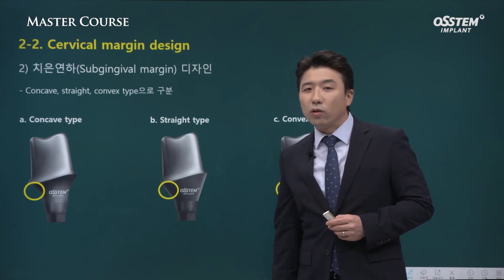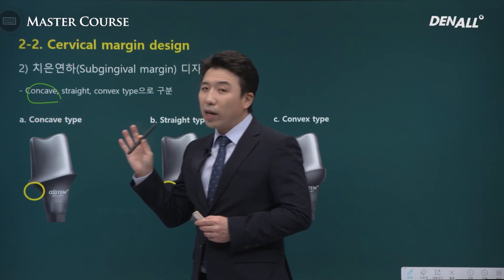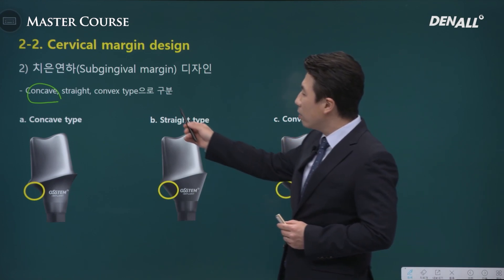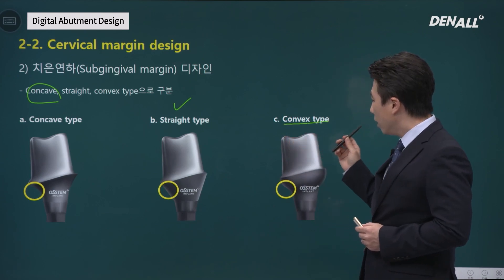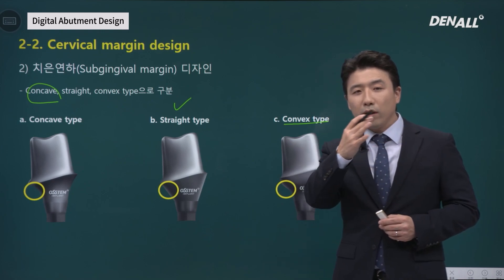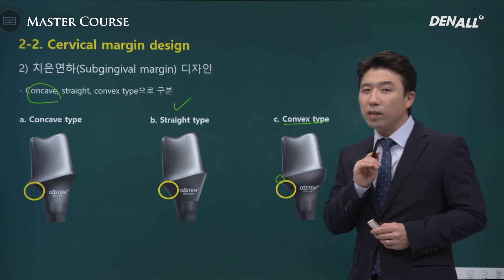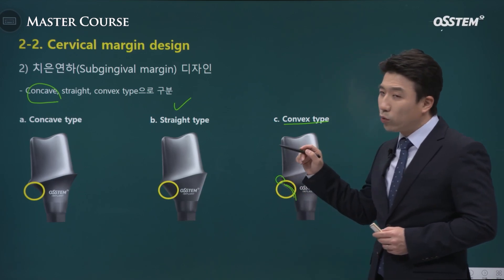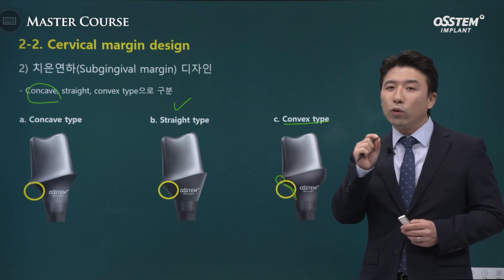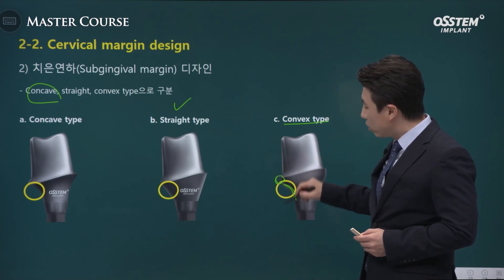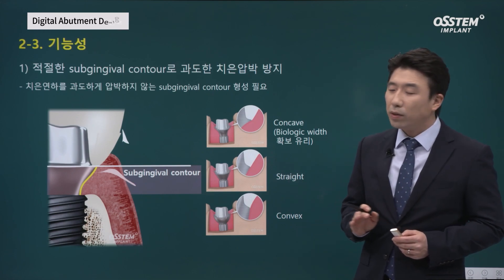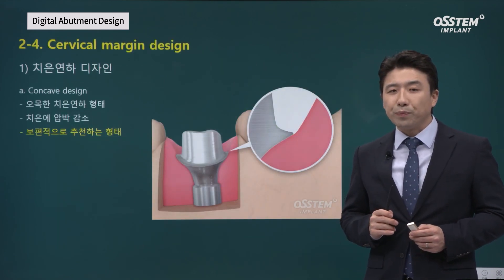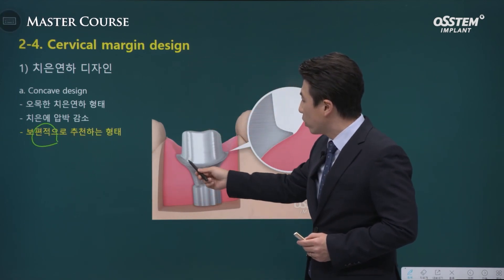Another important point is subgingival margin design. The correct answer is that it should be concave — this should be basic. Depending on different situations, you can make different choices. Straight type is not a bad option, but the problem lies with the convex option. In the anterior zone, tissue molding on top sometimes requires a convex design. However, in most cases, a concave design is more favorable because you can secure more biologic width and excessive pressure is not applied to the gingiva. Concave design is recommended as it allows you to secure biologic width.